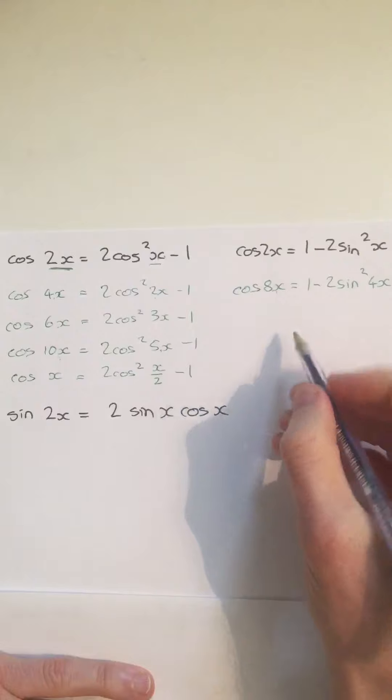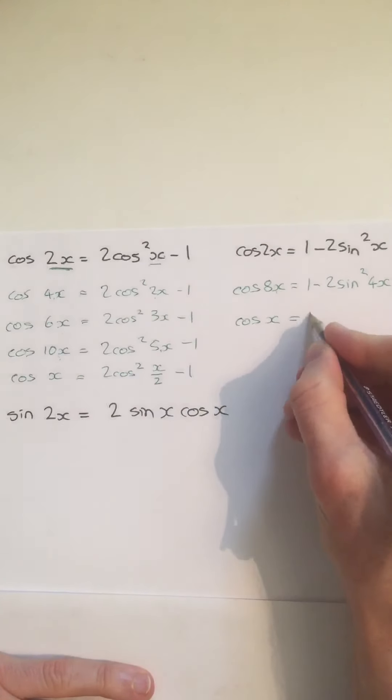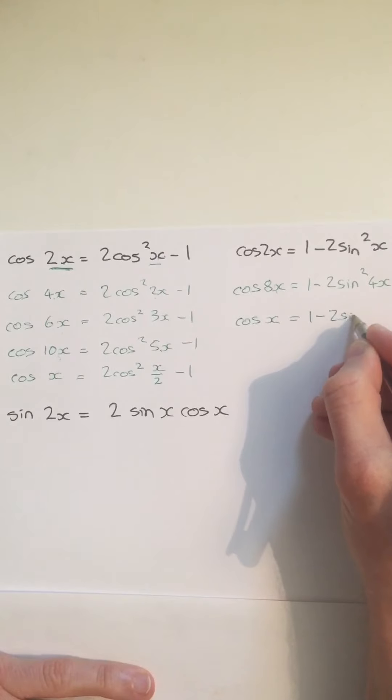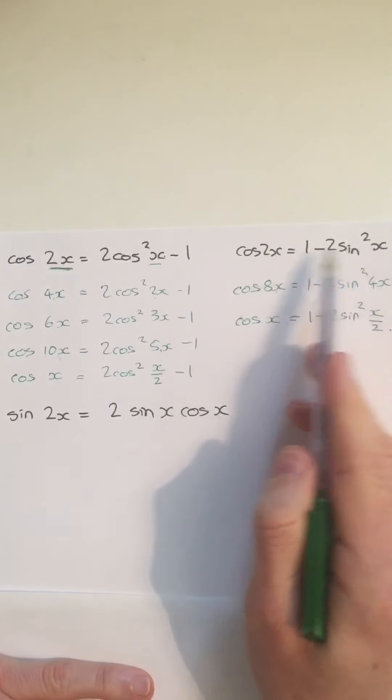We could again half. We could say cos x is 1 minus 2 sine squared x over 2. So again, we can adjust this as long as we keep these in proportion.